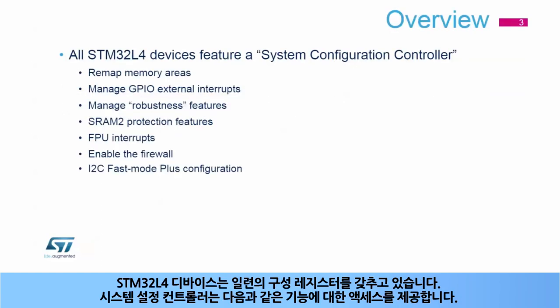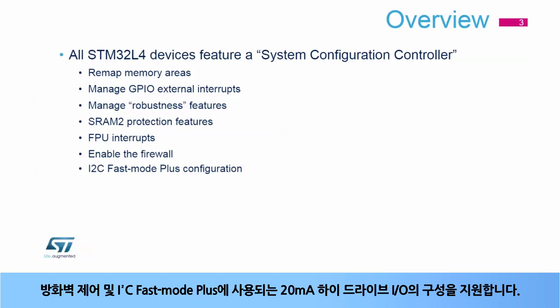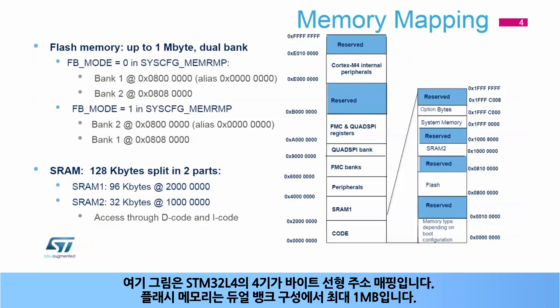STM32L4 devices feature a set of configuration registers. The system configuration controller gives access to the following features: remapping memory areas to address zero, managing the external interrupt line connection to the GPIOs, certain robustness features, SRAM2 write protection and erase, floating point unit interrupts, firewall control, and the configuration of the 20mA high drive IOs used for I2C Fast Mode Plus. Pictured here is the 4GB linear address mapping of the STM32L4.